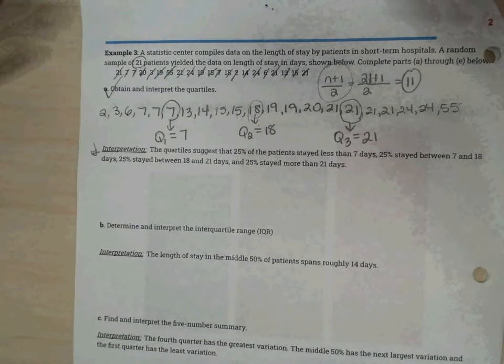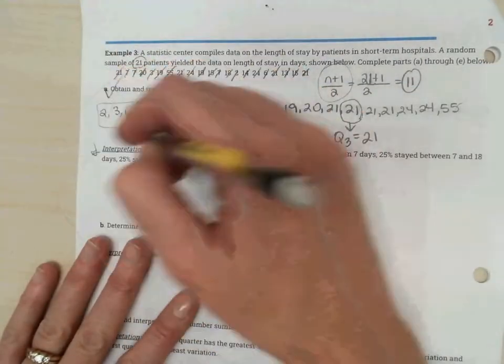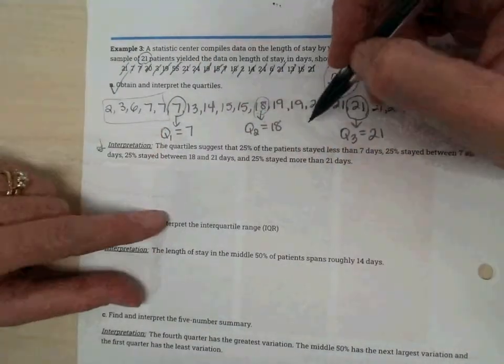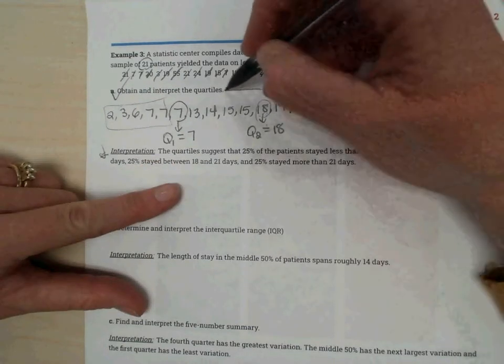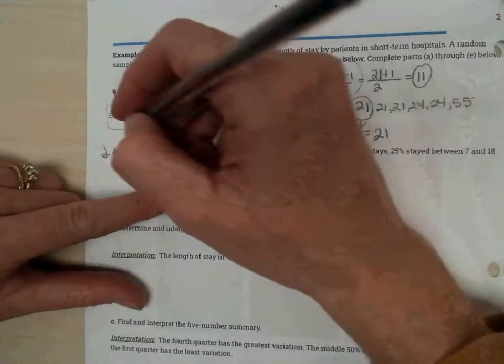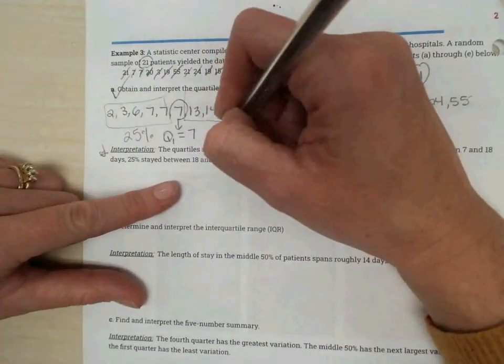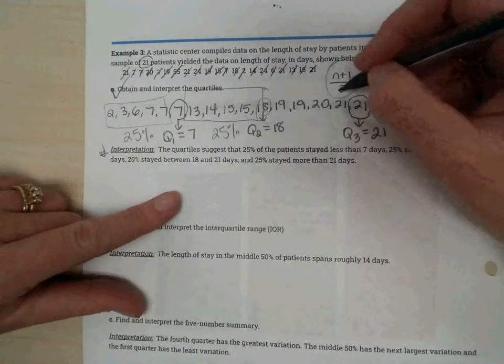So 25% are staying in this amount of days. We've got 25% staying within the seven to 18 days. Each one of these blocks represents 25% of the observations.